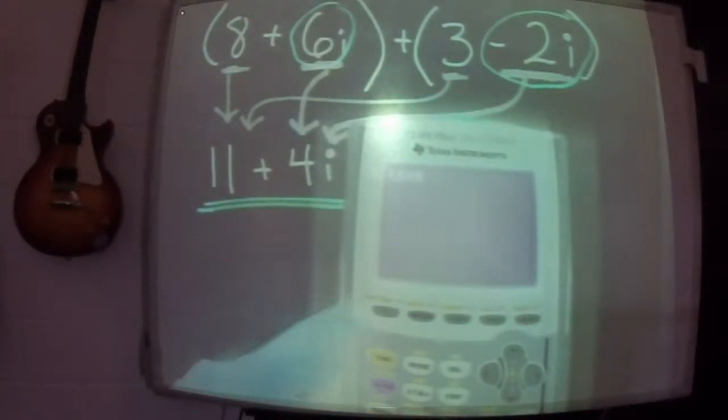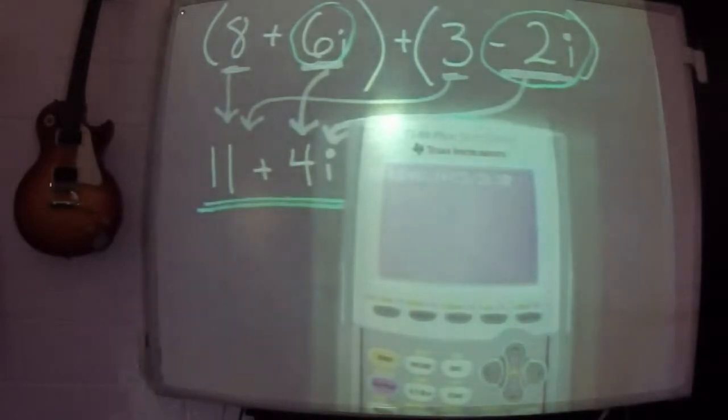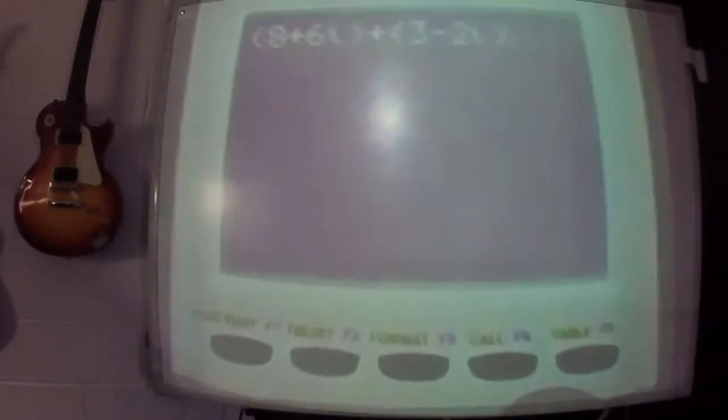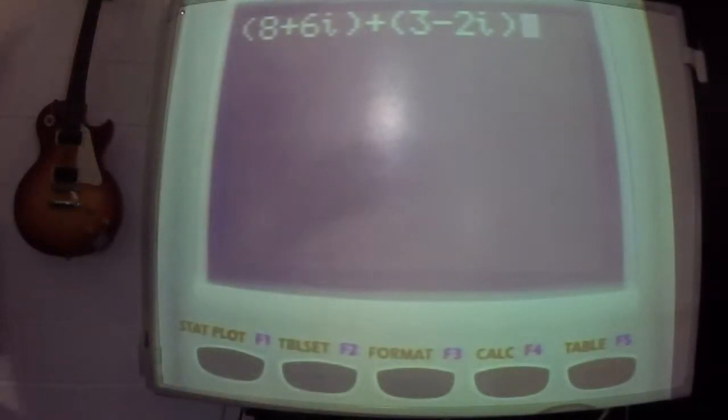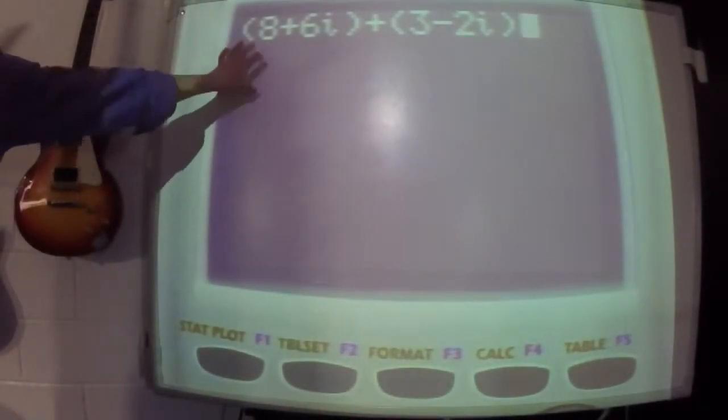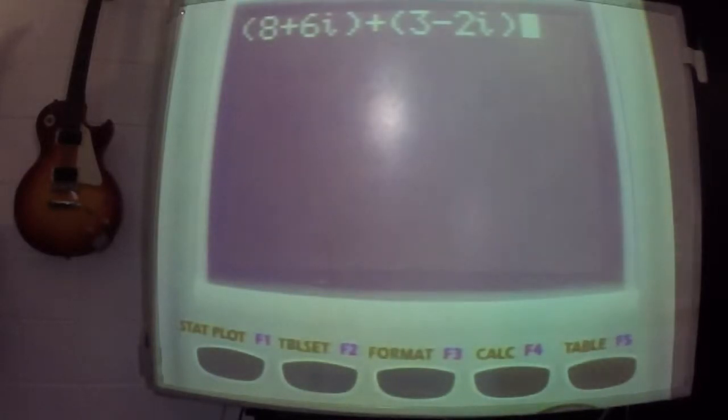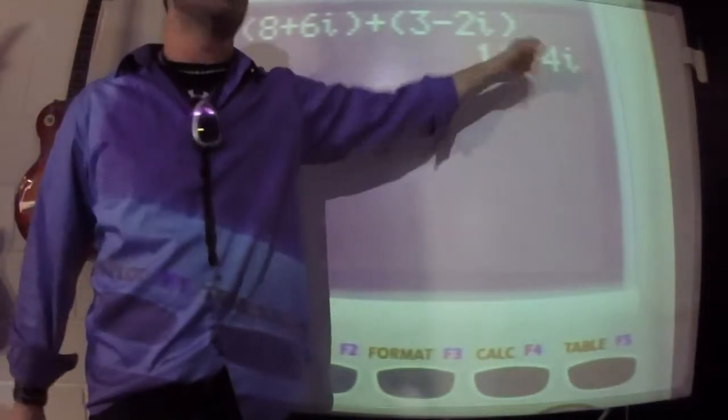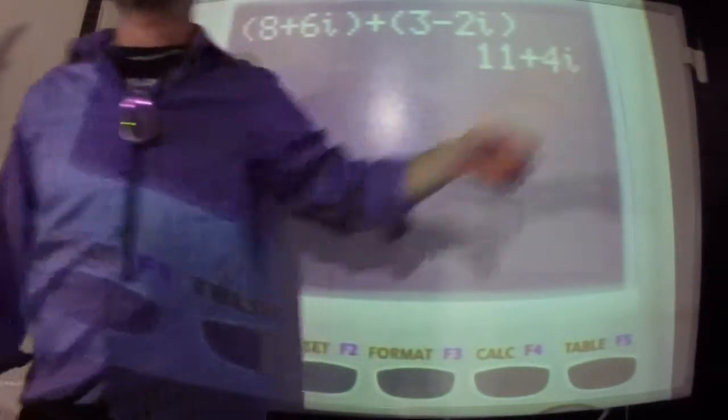So if I go, eight plus six i, plus three subtract two i. Make sure you say subtract, do not put three negative two i, that's not it. If I put it in just like that, I know the answer is eleven plus four i, and the calculator is going to tell me just like that. It's a complex answer. It's two parts. Eleven plus four i.